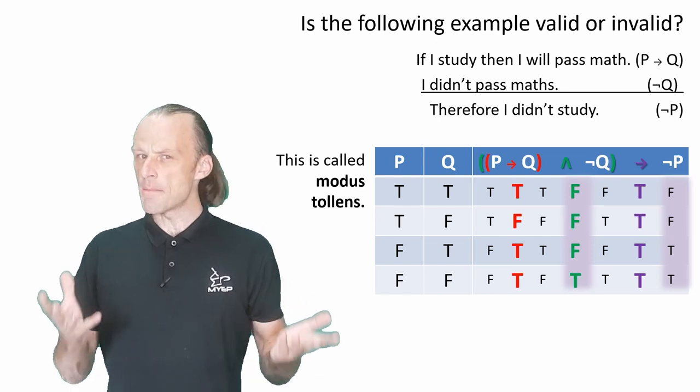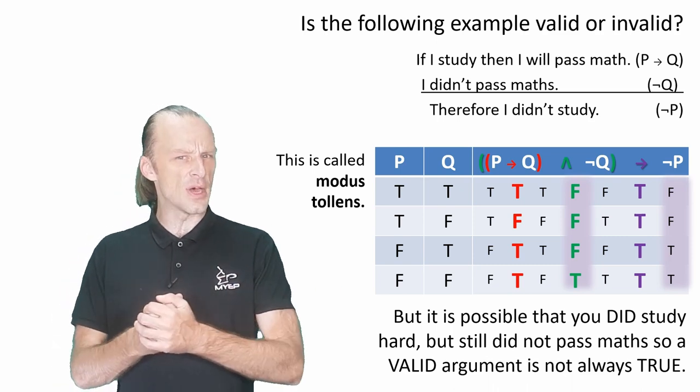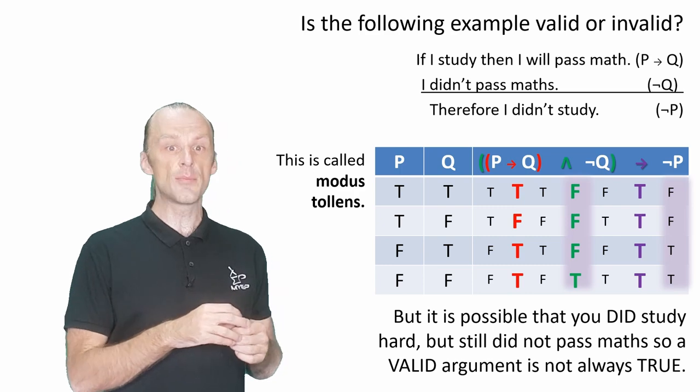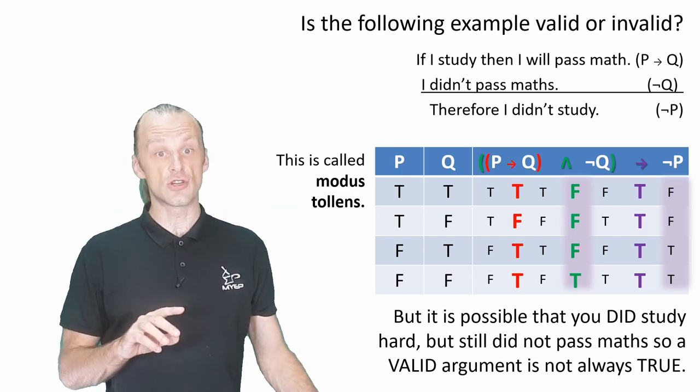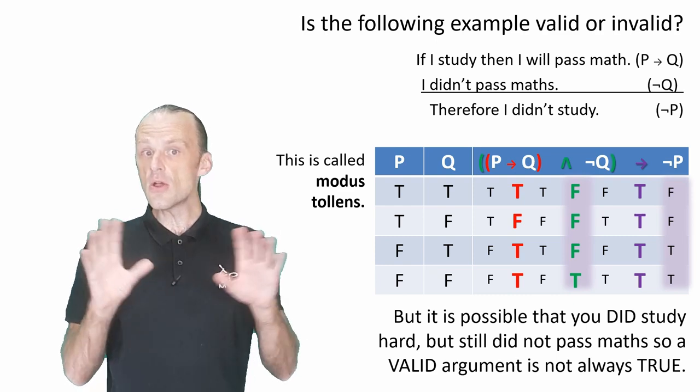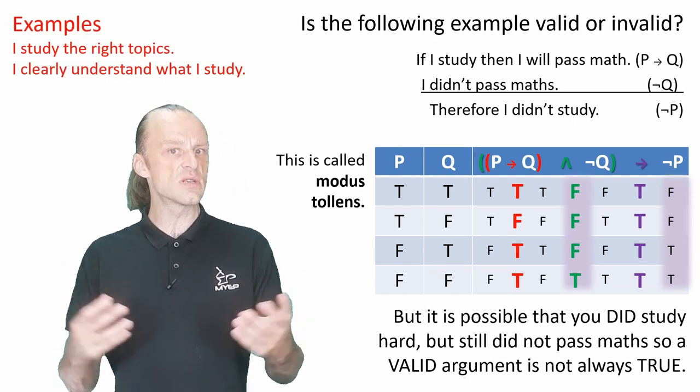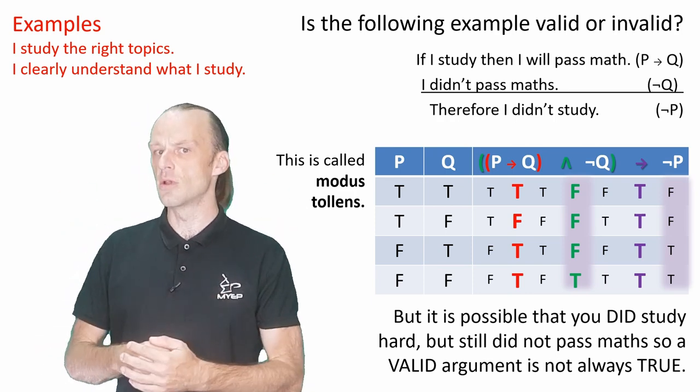But look at the example again. We can imagine a situation where I do study hard, and I still do not pass maths. So what is going on? This would be an example like we mentioned above, where we need to attack the conditional premise one. It does not capture all the possibilities. There is one or more suppressed premises to the conclusion, then I will pass maths.